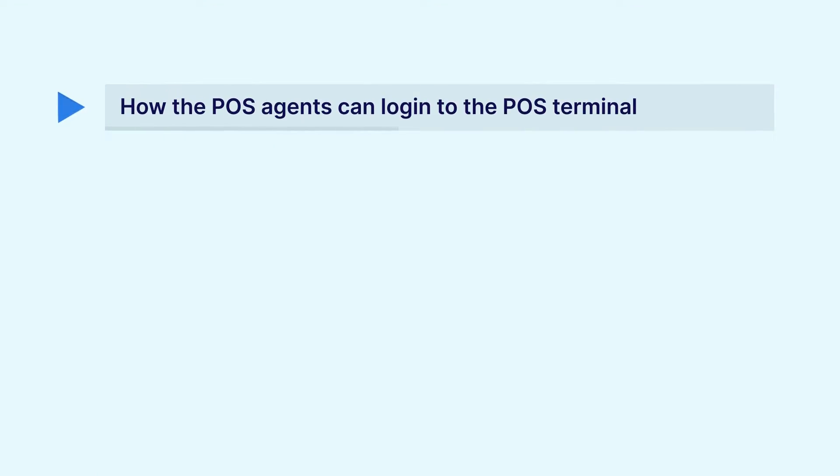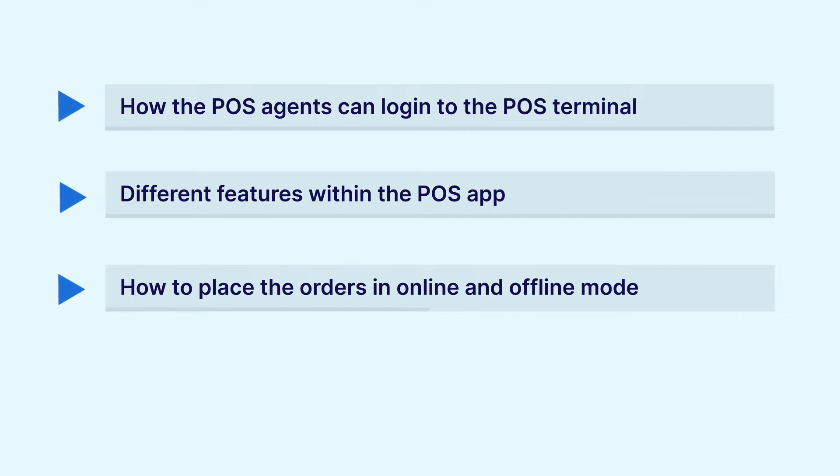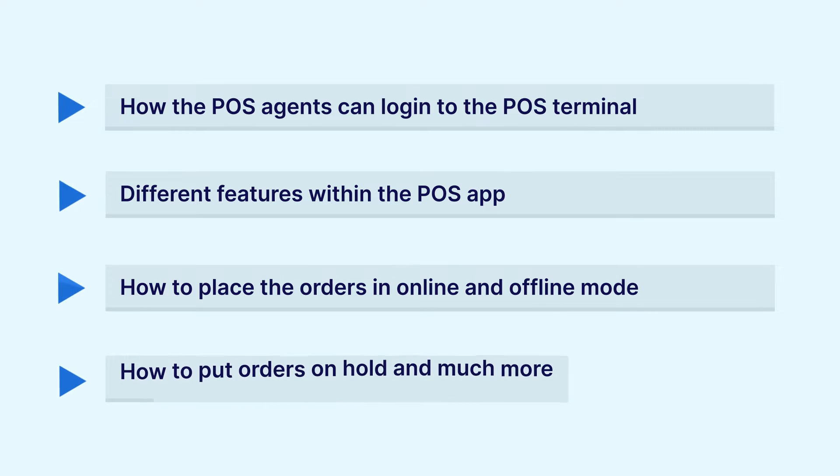The particular agents would now be able to log into their POS Terminals using the mobile application. This will be demonstrated in today's video tutorial for Android devices. I've downloaded the OpenCard POS Flutter application from the Google Play Store and installed it on my Android tablet. I'll be taking you through the procedure of the application itself, seeing the different features within the app, how to place orders in online as well as offline mode, how to hold orders, and much more. For the same, we'll be hopping onto the front end of the Android device.